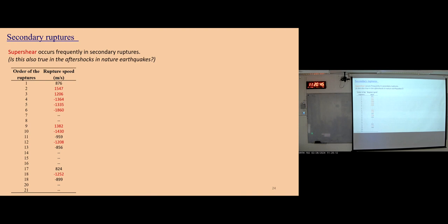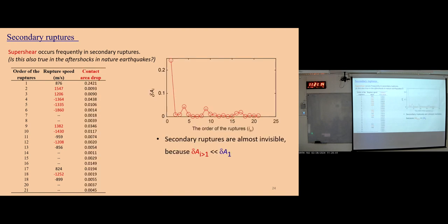Let's consider some details of these secondary ruptures. First is rupture speed — we find a lot of super-shear events. The shear wave speed is about a thousand meters per second, so super-shear occurs frequently in these secondary ruptures. Is this also true for aftershocks in natural earthquakes? I'm not sure — I cannot find any article discussing the speed of aftershocks; maybe nobody has looked at this. At the same time, we can measure the contact area for all these secondary ruptures. Except for the first one, all secondary ruptures are mostly invisible and much smaller than the first one — but still larger than the noise level, so they are real.